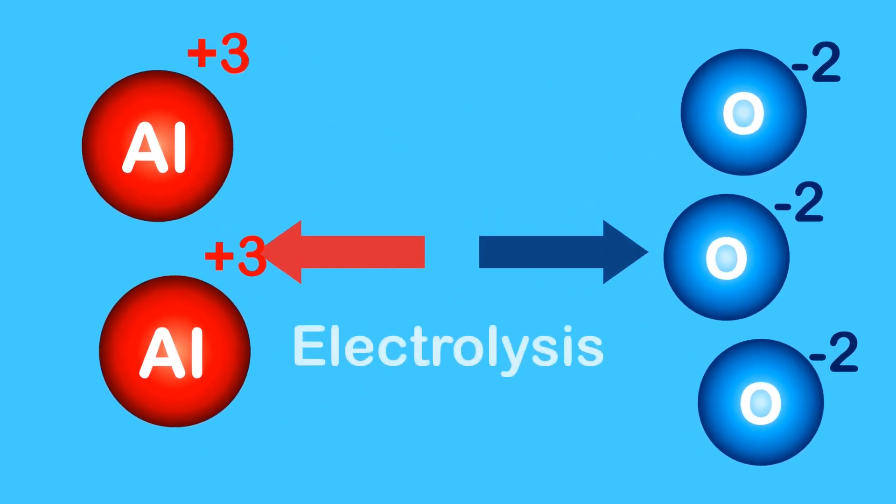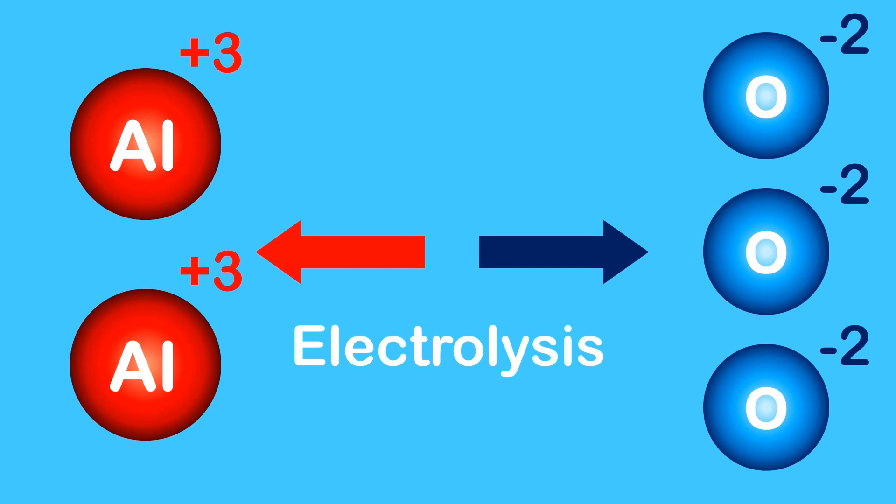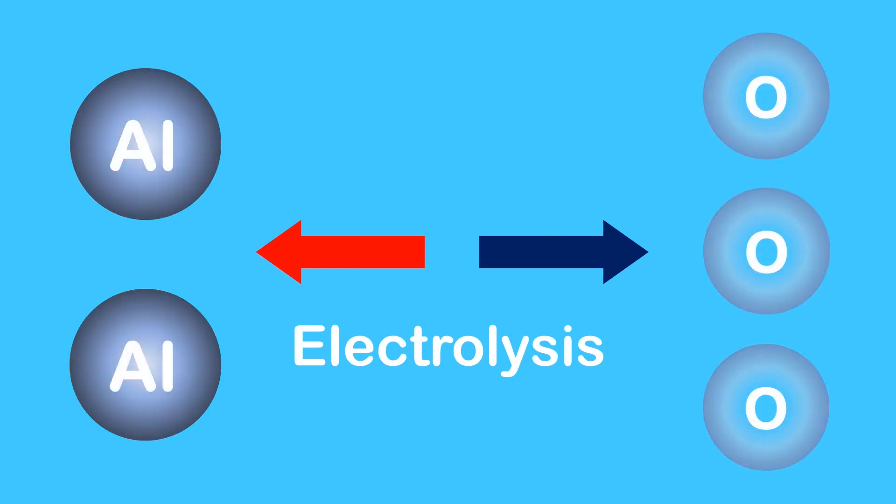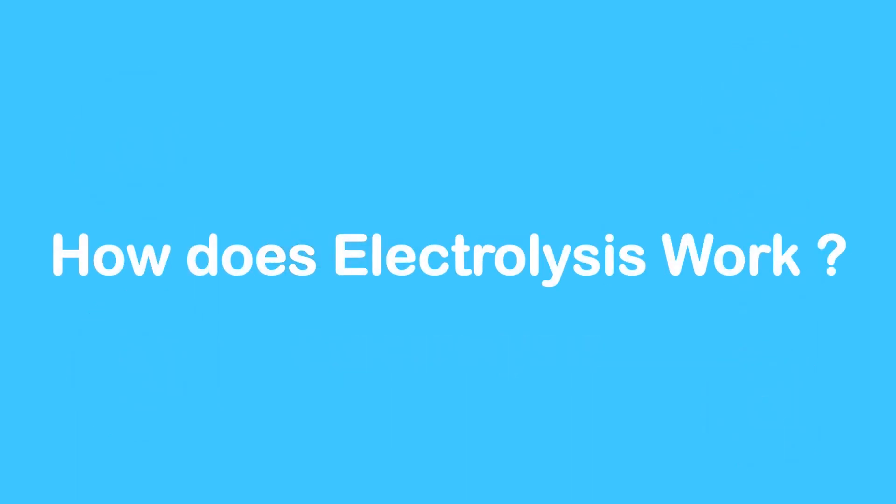Electrolysis uses electricity to split the metal ions from the nonmetal ions and then turns them both into neutral atoms. This allows us to extract pure aluminium. So, how exactly does electrolysis work?